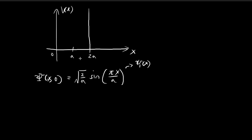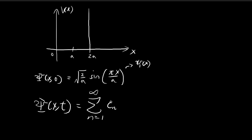What we want to find in this problem is the different probabilities of obtaining the different energy levels. If you consider the general form of the wave function, we have some constants cₙ multiplied by ψₙ(x) times e to the power of negative i Eₙt divided by ℏ. This cₙ gives us the different probabilities of obtaining the different energy levels, so these are the values we want to find.